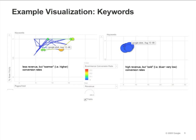By comparing the size of the dots, we can see that the keyword on the left attracts much less revenue than the keyword on the right. But even though it brings in less revenue, the conversion rates on the left are much higher, indicated by the warmer colors. So it might be appropriate to try to attract more traffic on this keyword by buying it.